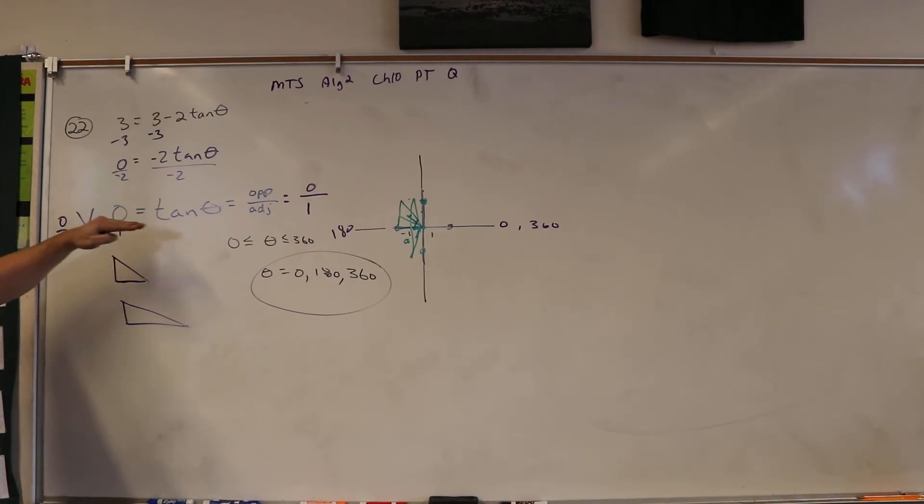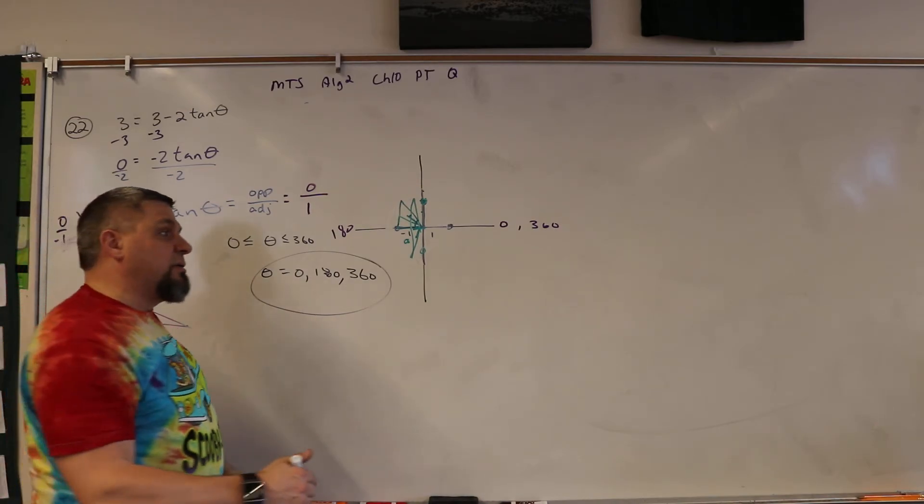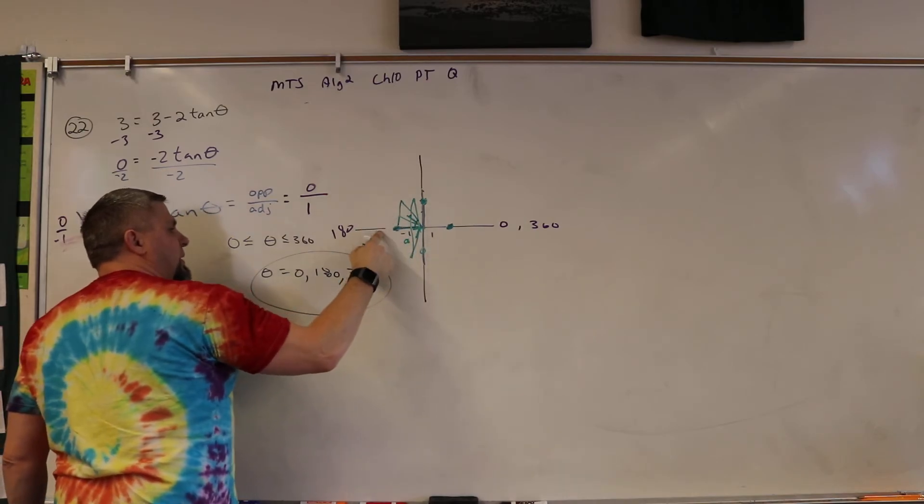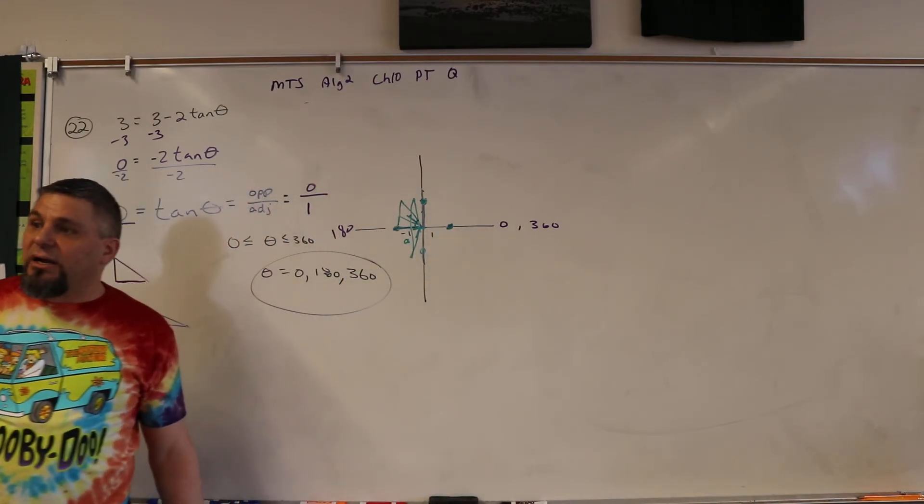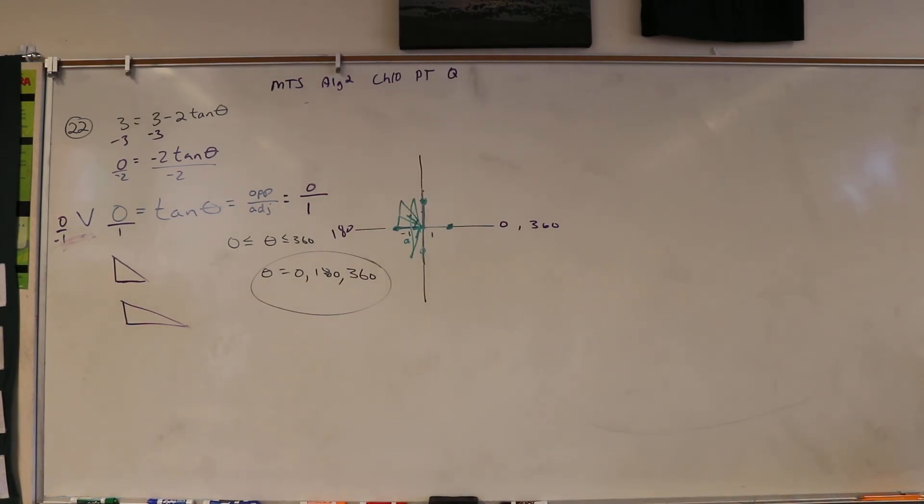So if this was undefined, we would want these two points. But because it's zero, we want these two points, which is zero, 180, and 360. So if it's zero, it's 45-45? Actually, it doesn't matter on the 45-45 or 30-60, because we're talking about zero. Does that make sense? Yeah. Yeah, I was thinking I was gonna tie it in the 30-60, but it doesn't matter. It's just zero.